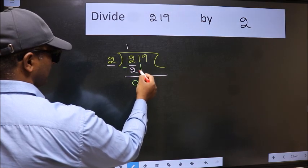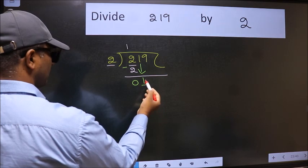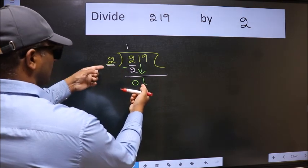After this bring down the beside number. So 1 down. Now here we have 1 and here 2. 1 is smaller than 2.